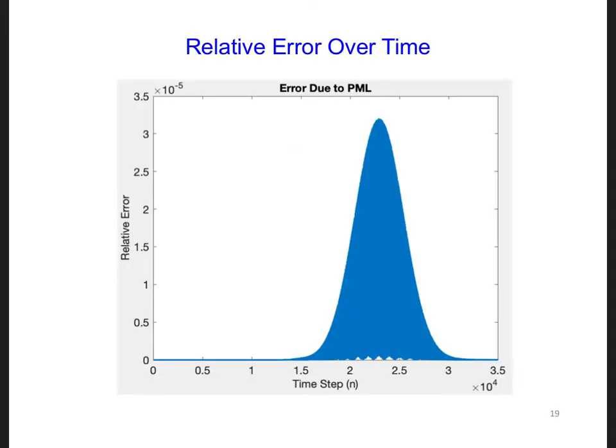Here is a plot of the relative error that I obtained over time. You can see it peaked out around 3.2 e to the minus 5, meaning the reflection error is about five orders of magnitude lower than the amplitude of the incident wave. This is much lower than the errors that radiation boundaries typically provided before PML came along.